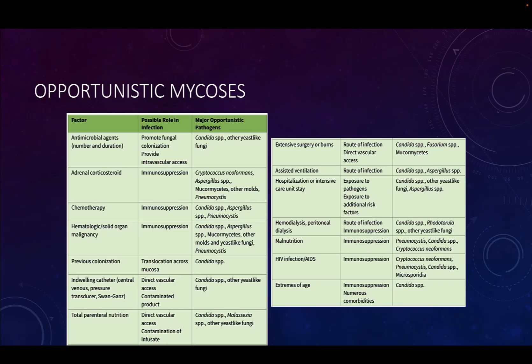The opportunistic mycoses are fungal infections that are mostly only going to make people sick if they are otherwise compromised, just like with our opportunistic bacterial infections. There are lots of different things that can make a patient susceptible to an opportunistic fungal infection — why it makes them susceptible, and what are some of the major fungal infections these patients might get.